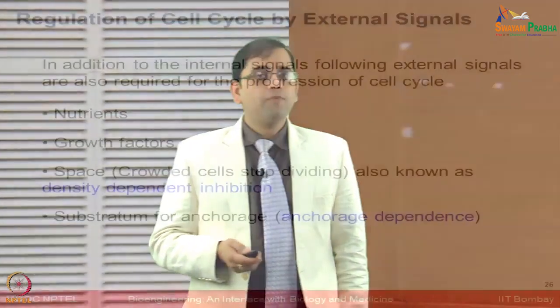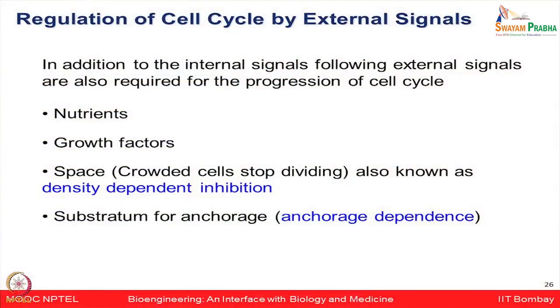In addition to internal signals, various external signals also regulate the cell cycle — for example, nutrients, growth factors, available space, and substrates. Nutrients and growth factors are crucial for the cell cycle to operate. Even space can be a constraint: if it is too crowded, cells should ideally stop dividing — a process known as density-dependent inhibition — because there is not enough space for more cells to grow.